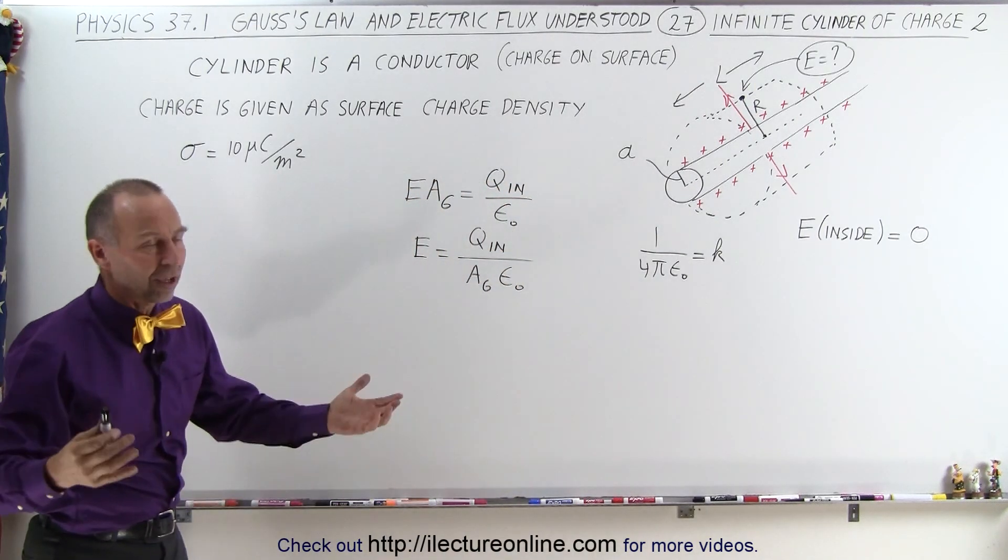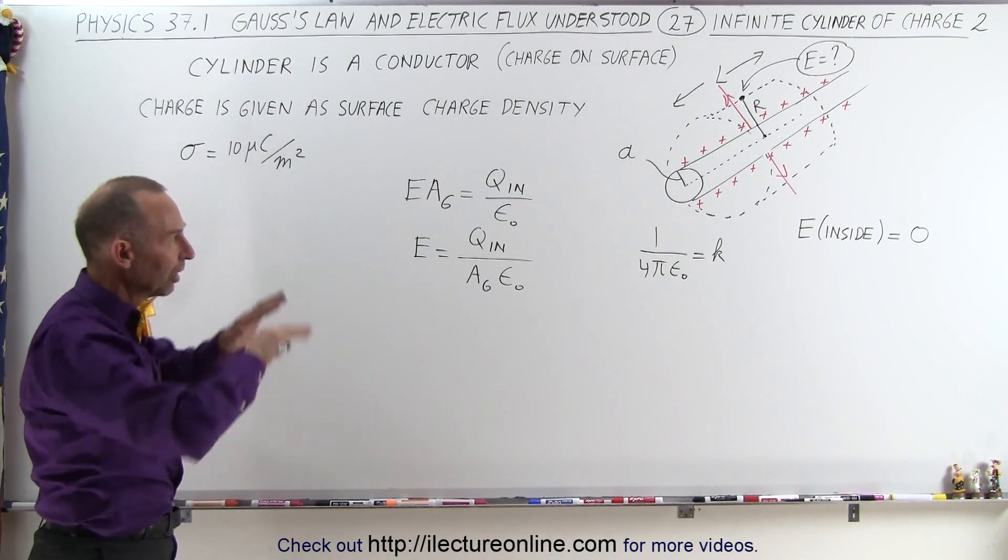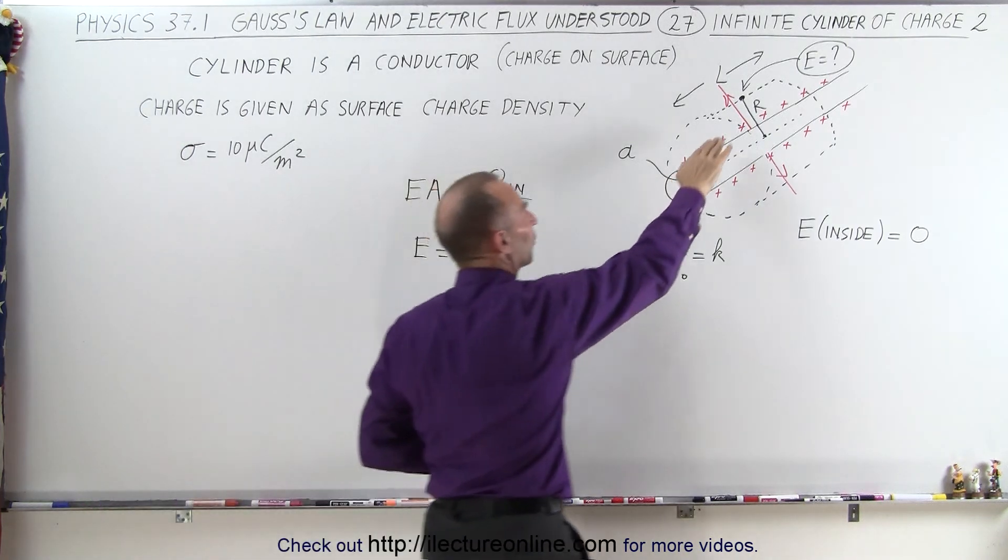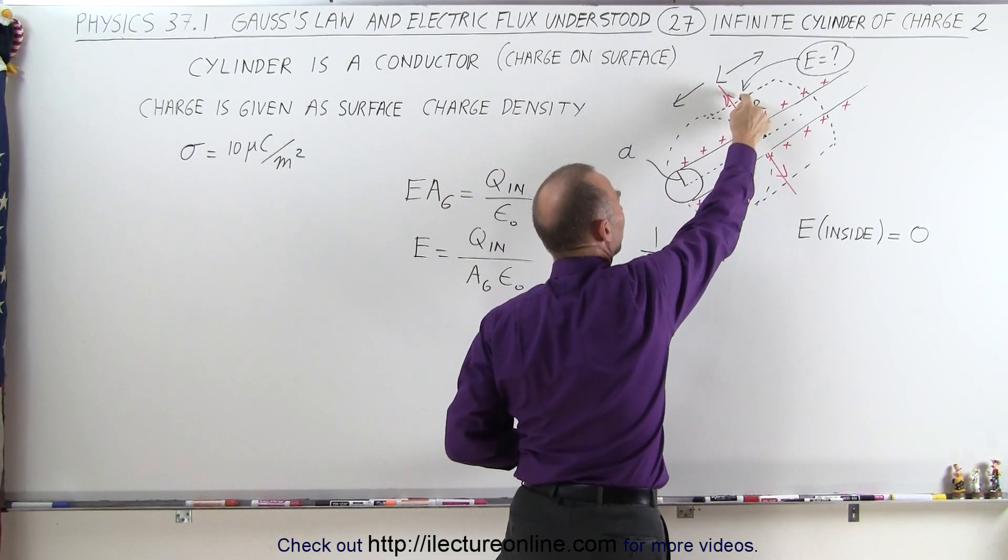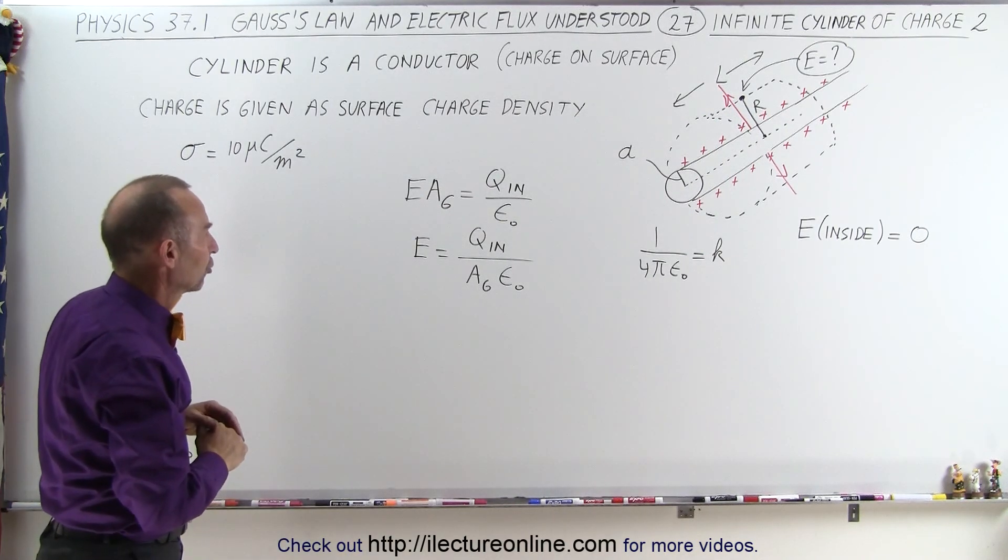Anyway, we're just going to say r is the distance away from the center of the cylinder carrying the charge, and then of course you have the Gaussian surface around it, such that the surface of the Gaussian surface meets the point of interest distance r away from the center of the cylinder carrying the charge.